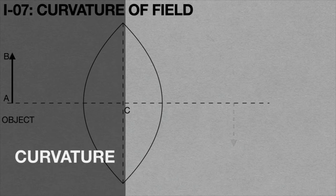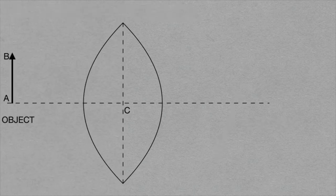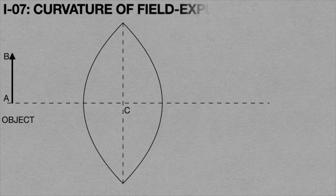Due to the curvature of the lens, we will get a curved image A dash B dash. Now we will discuss the explanation for this curvature of field aberration.